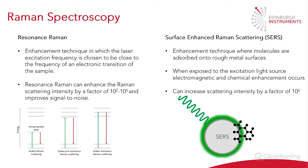One drawback of resonance Raman is the increased fluorescence that can swamp a Raman signal. When you match the laser to an absorption band, absorption will occur, meaning there is a high chance of fluorescence completely obscuring the Raman peaks. This interference is one of the biggest limits for the use of resonance Raman in the field today. However, we can get around this by using pre-resonance Raman, where we use an excitation about 100 wavenumbers below the electronic transition. Here we'll still get some enhancement, but fortunately we will also see less risk of fluorescence swamping the sample.